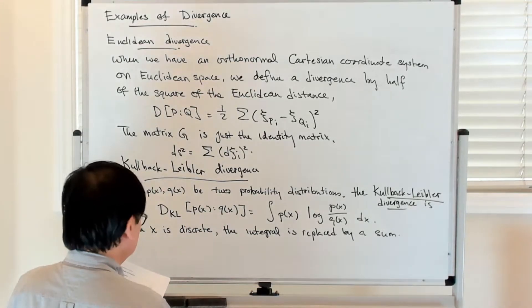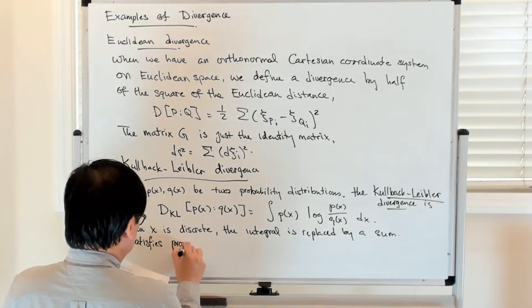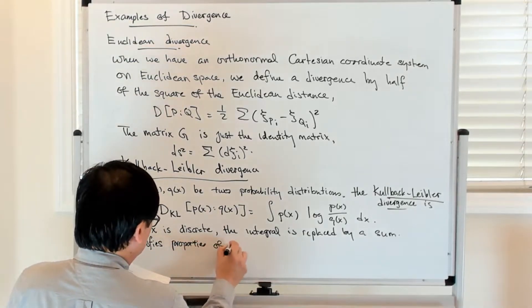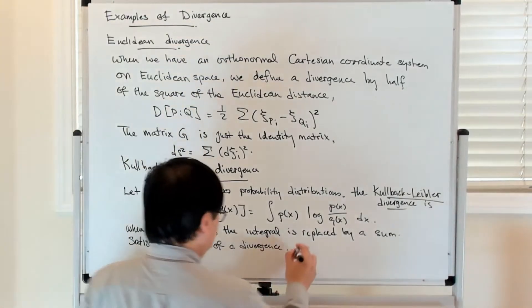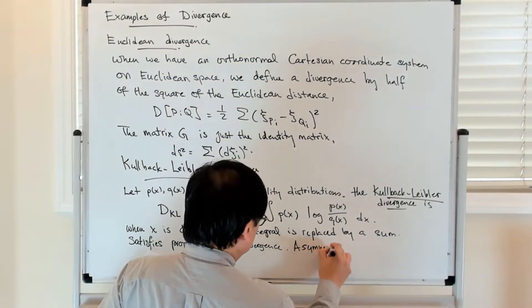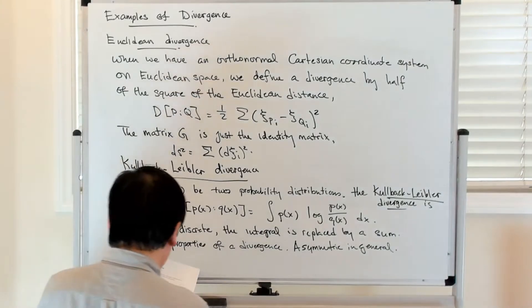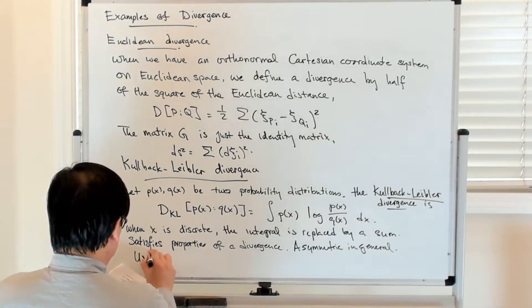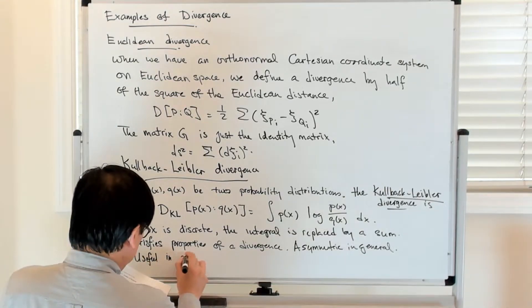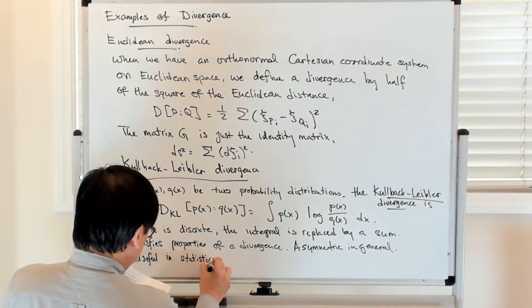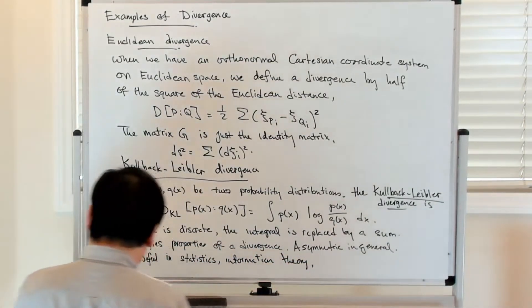It's asymmetric in general, so it satisfies properties of a divergence. And it's useful in a bunch of circumstances in statistics, information geometry or information theory, physics, etc.